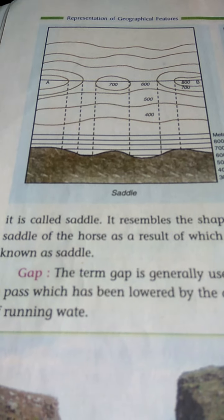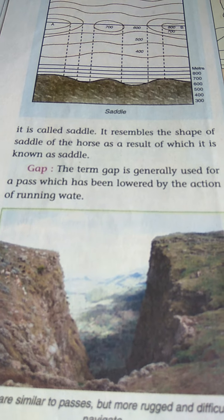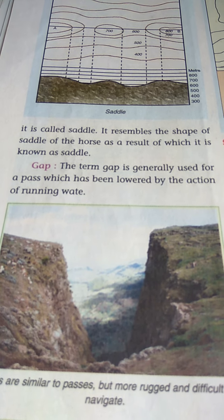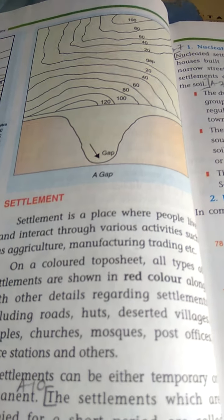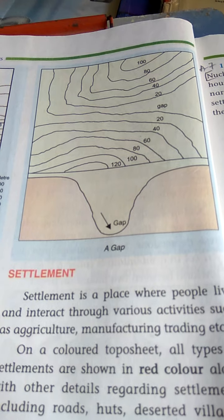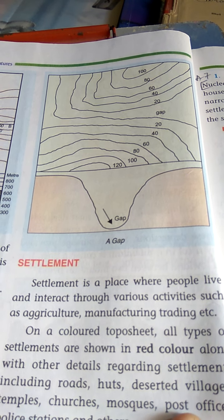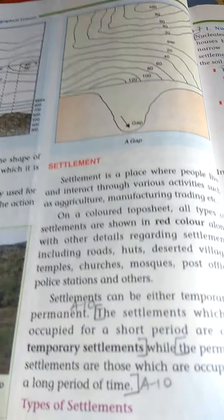Next one is gap. The term gap is generally used for a pass which has been lowered by the action of running water. Next one is settlement. Settlement means a place where people live and interact through various activities such as agriculture, manufacturing, trading, etc. There are three types of settlement.